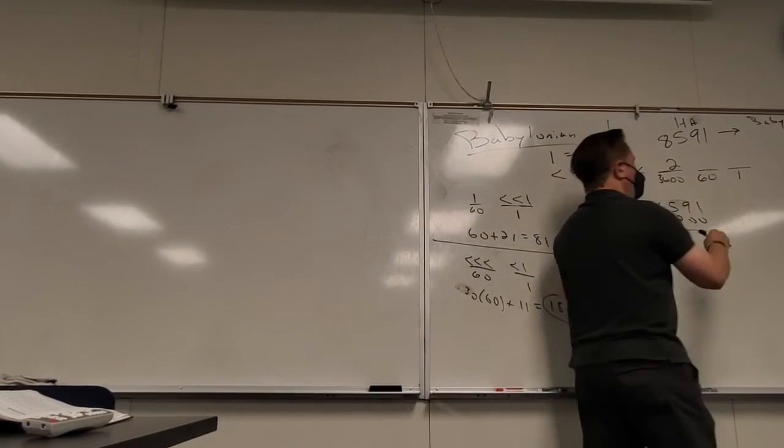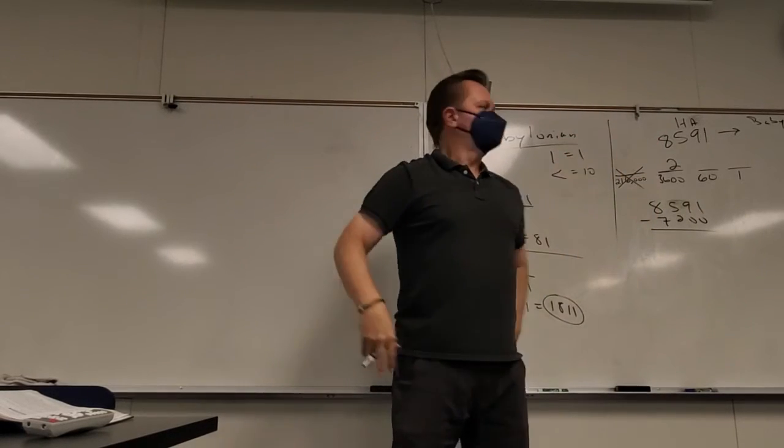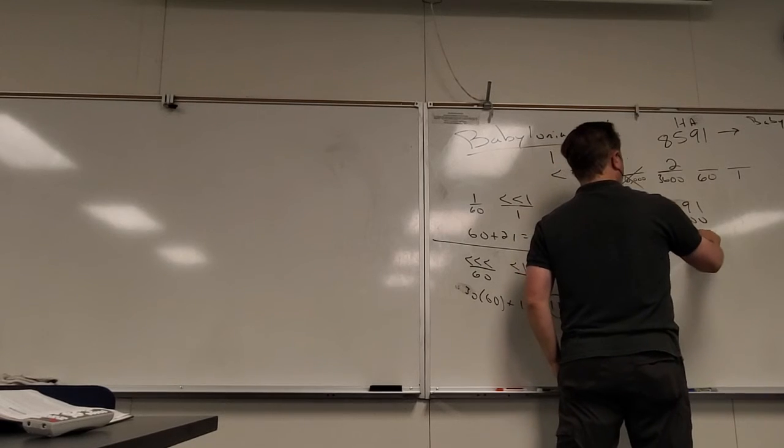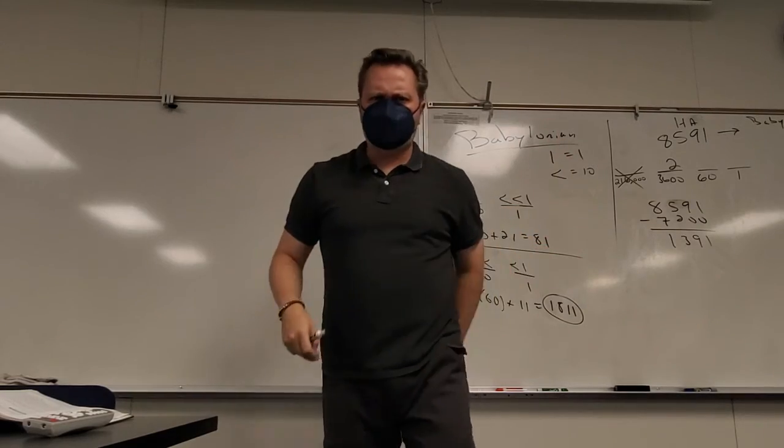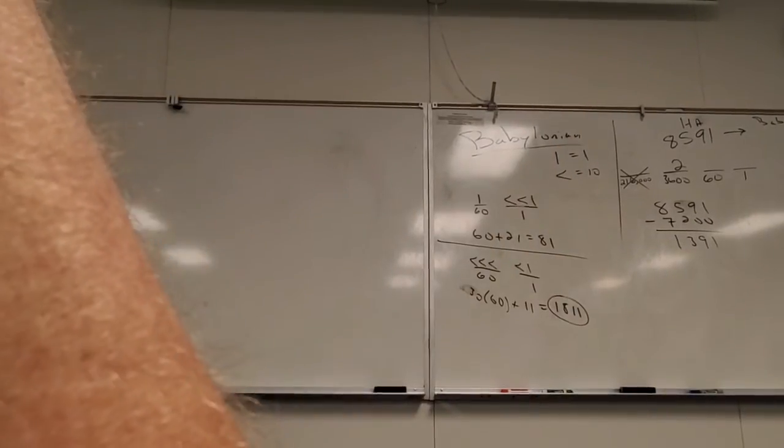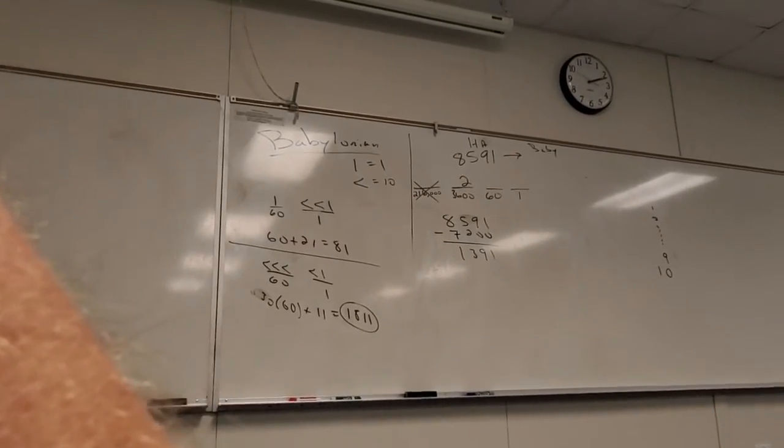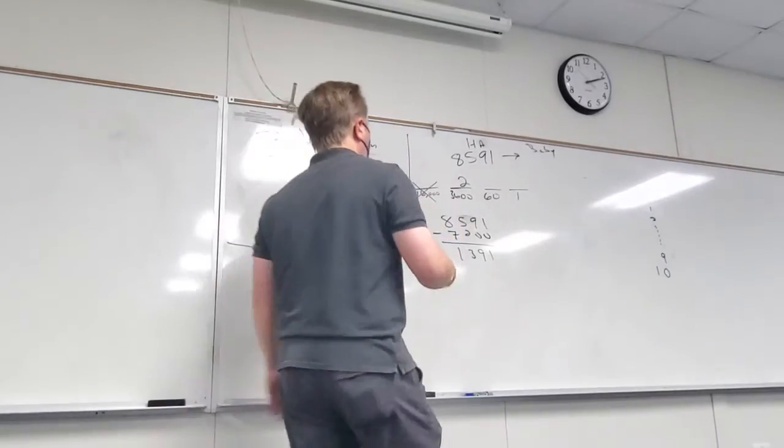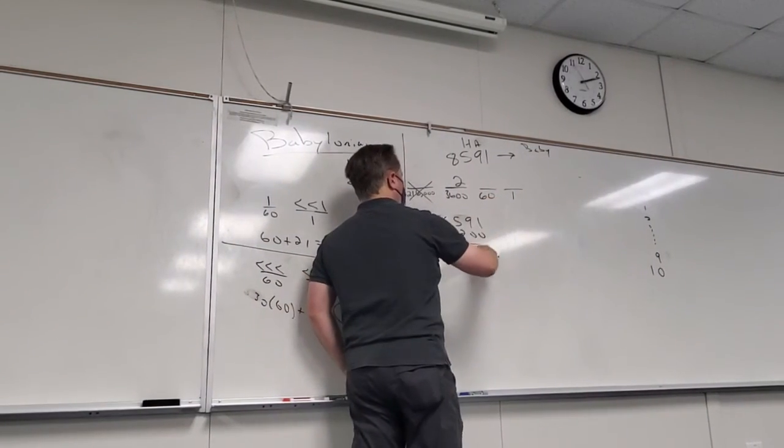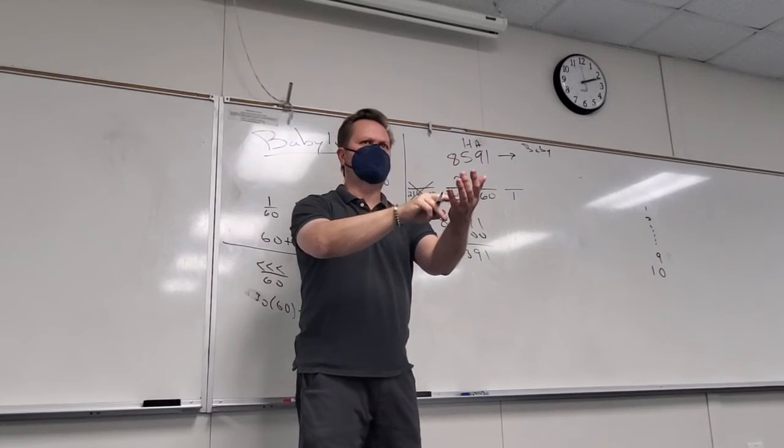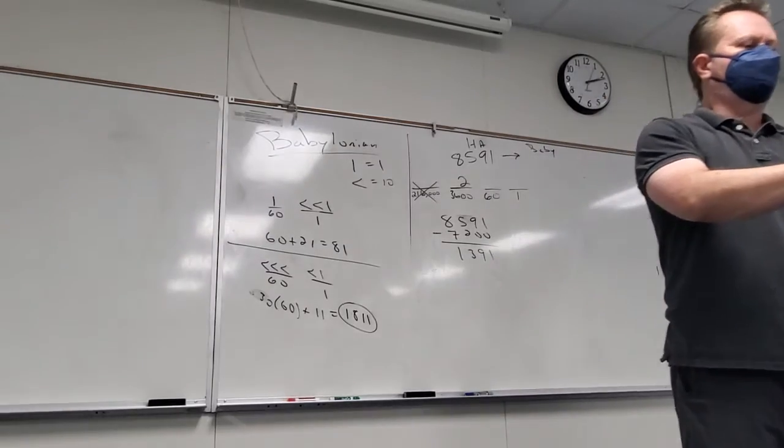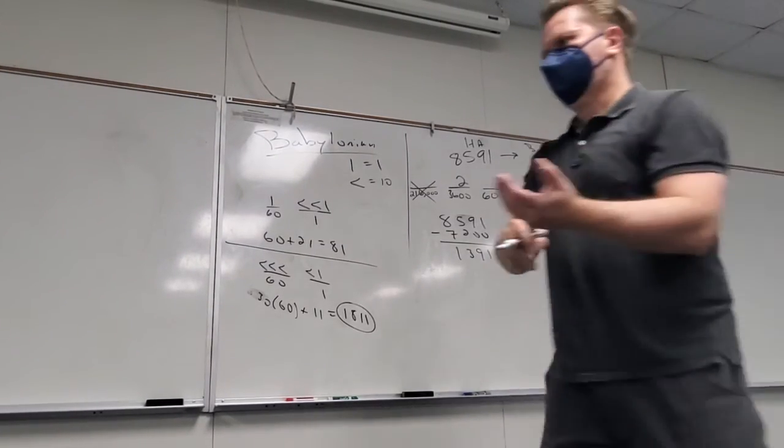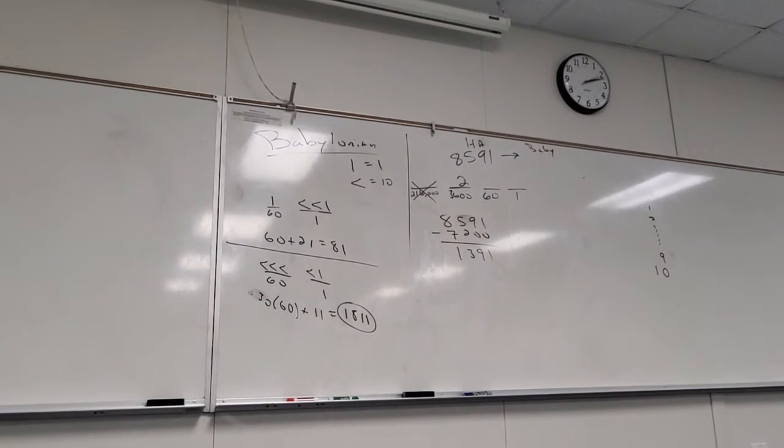How many places are there? Can you guys tell? Two. Two places, definitely, right? I made a nice space in the middle. There's two places. What place is this? One. What place is this? So there's 11 in the ones place, I love it, and 60s. So how many 60s do I have? 30. Good.